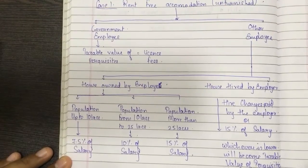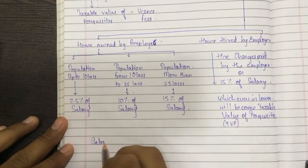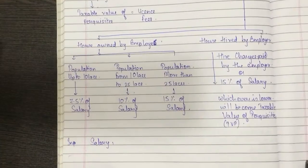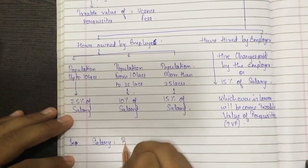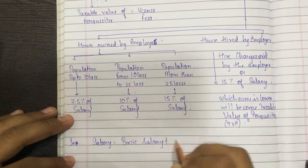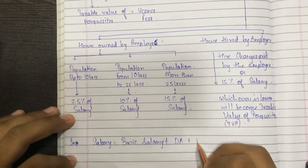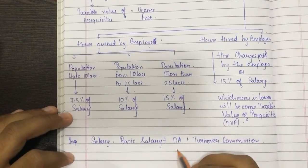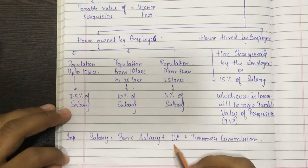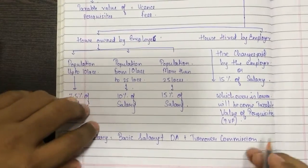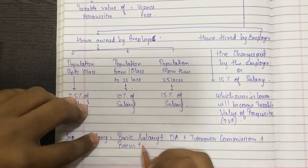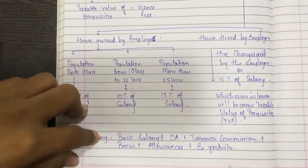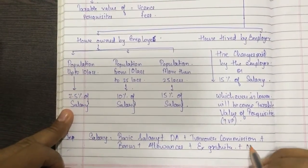This is the taxable value of perquisites. Now, salary is very important — please note this carefully because many times you may make errors here. Salary equals: basic salary plus DA — that is, dearness allowance — plus turnover commission plus bonus if any, plus allowances if any, plus ex-gratia if any, plus normal commission.